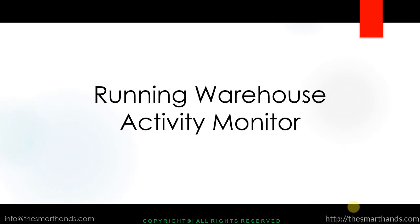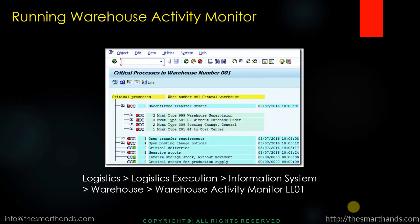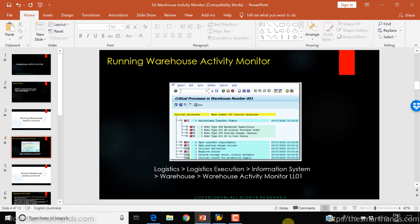First, let us understand what the Warehouse Activity Monitor is used for. For example, if you want to see what open transfer requirements are still in the system — still waiting to be converted to a transfer order — or maybe there are existing unconfirmed transfer orders still waiting to be confirmed. We want to see what pending documents are still waiting to be processed: unconfirmed transfer orders, open transfer requirements, open deliveries, negative stock, stock in interim storage bins, and so on.